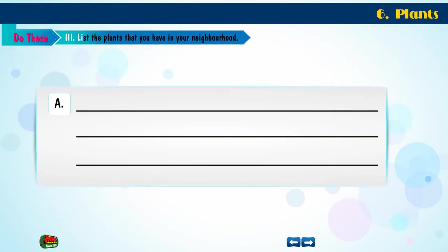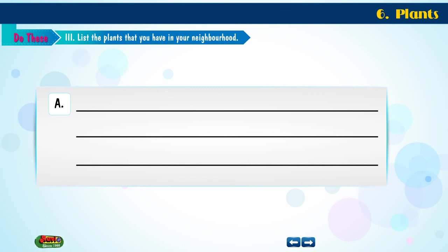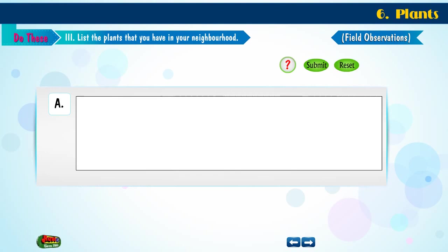Activity 3: List the plants that you have in your neighborhood. Field observation.